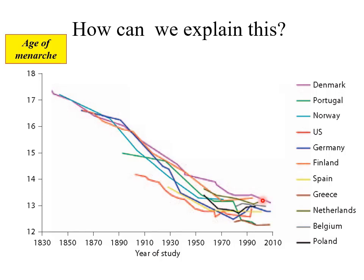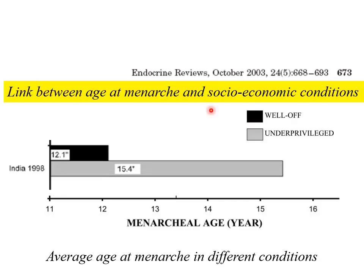Why should that be the case? It's been put down to many things, but the answer generally is better socio-economic conditions, especially better nutrition. The link between age of menarche and socio-economic conditions has been studied many times. Here's data from India in 1998 comparing well-off girls with good nutrition to underprivileged girls with much poorer living conditions and nutrition. The well-off girls reached puberty much earlier than those who were underprivileged.